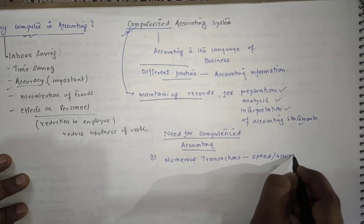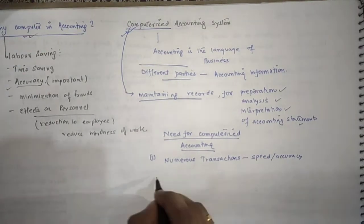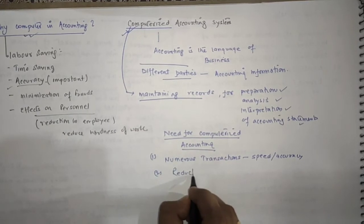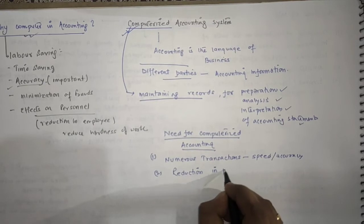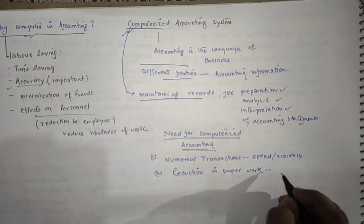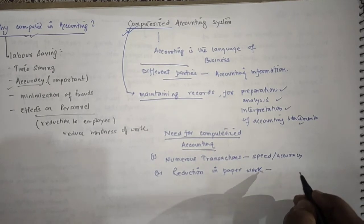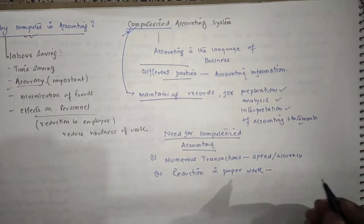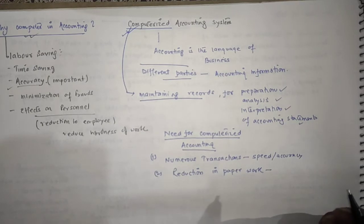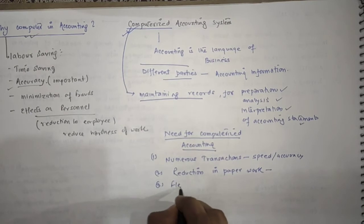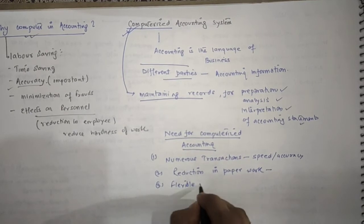Then we have number two as reduction in paperwork. As we know that manual accounting is huge paperwork, but when you do computerized accounting, the requirement is very less. It is automatically saved, just as an example is Tally. Third, flexible reporting.